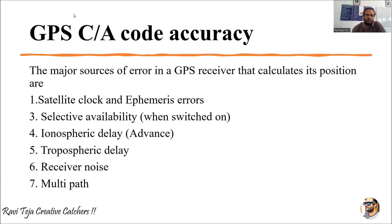Hello everyone, welcome to the course of Satellite Communications. In today's class we are going to learn about GPS C/A code accuracy. We have already learned about the Global Positioning System (GPS) and how the C/A code is related to the GPS receiver. Here we are going to see how much accuracy the GPS C/A code will have, what errors are involved, and how positions are considered.